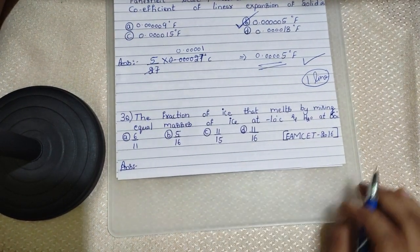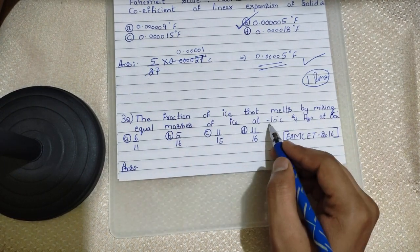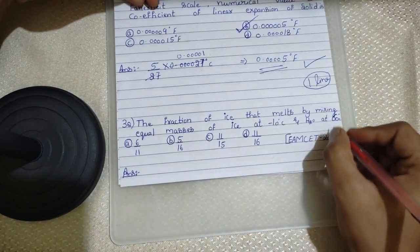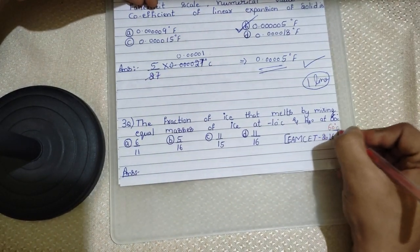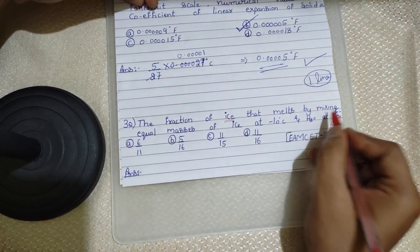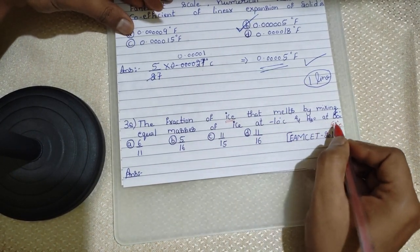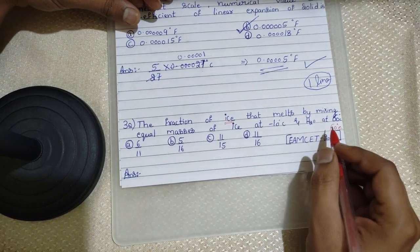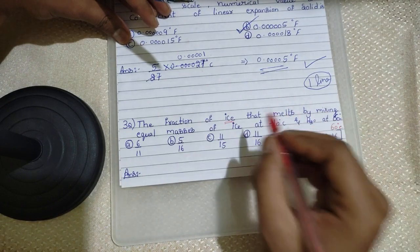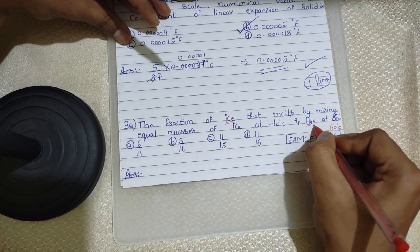Next question: find the fraction of ice that melts by mixing equal masses of ice at minus 10 degrees Celsius and water at 60 degrees Celsius. Again, even for this question I have a cheat code. Whenever you see an ice-and-water problem, apply my shortcut cheat code.